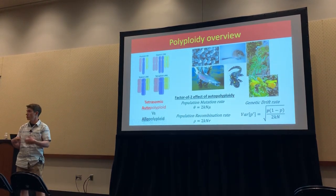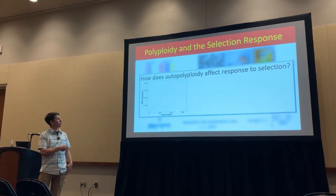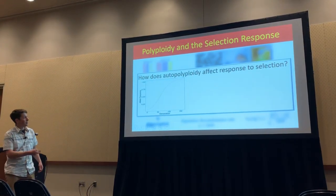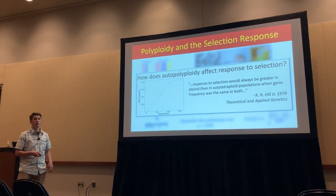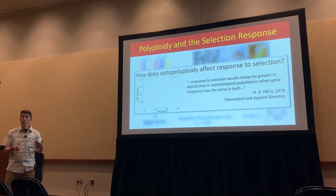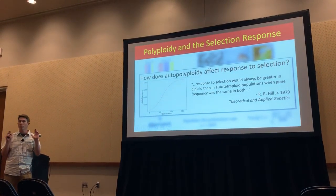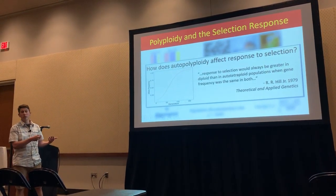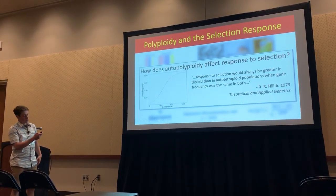It's also known from theory that the rate of genetic drift goes down, so neutral allele frequency change is lower as ploidy increases. But one thing not very well appreciated is how polyploidy affects non-neutral allele frequency change, or the response to selection. It has been demonstrated theoretically back in the 70s that the response to selection, if it's due to a single polymorphic locus, is always going to be greater in diploids than in higher ploidies. But this take-home message has kind of fallen off in the polyploidy community.